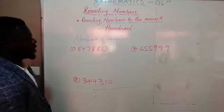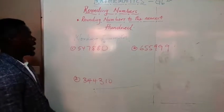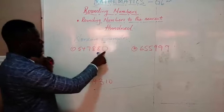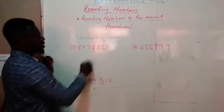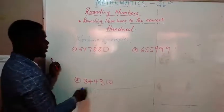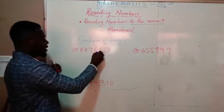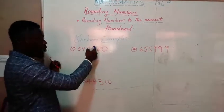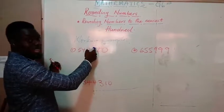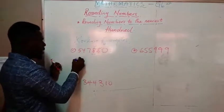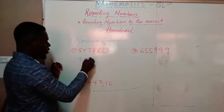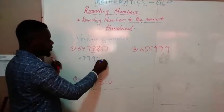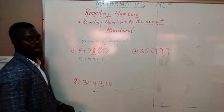Run to the nearest hundred. Let's identify our hundreds place over here. We have ones, tens, and hundreds — this is our hundreds place. Check the digit behind. The digit behind is eight. So we know the rule: if it is eight, we add one to this digit to make nine, and change it to zero. So our answer will be five, four, seven, nine, zero, zero. That is it.